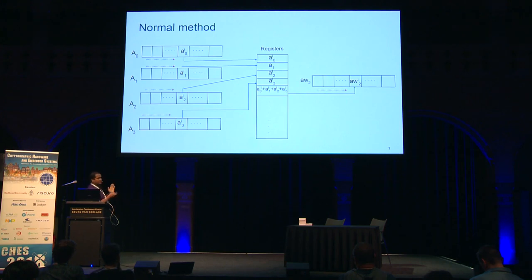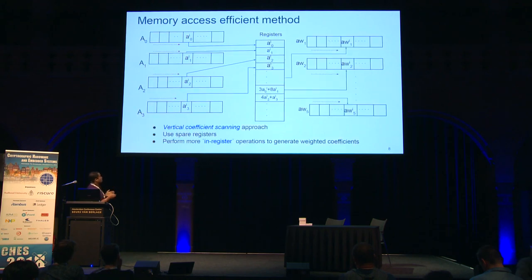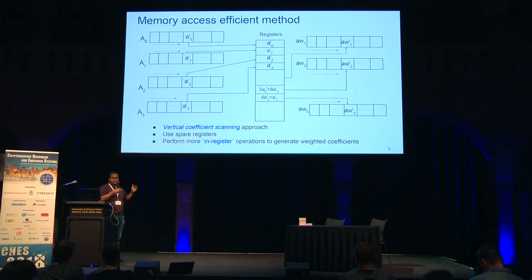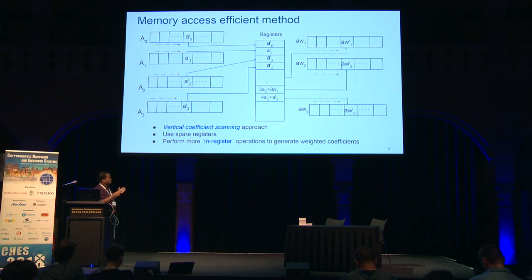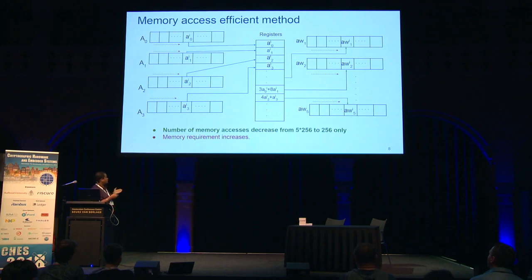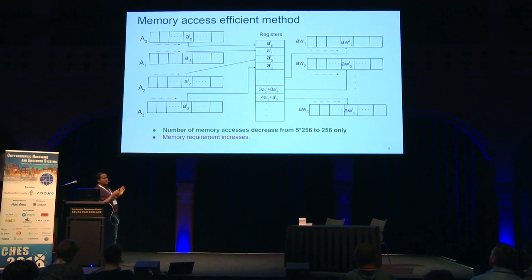Instead, we did a vertical coefficient scanning and in-register version of the Toom-Cook multiplication. We load our coefficients into registers, do all the weighted arithmetic inside the registers using some spare registers, and put them back in their corresponding positions. We do partial sums and some arrangements inside to reduce memory access as much as possible. As a result, instead of 5×256 memory accesses, we now need only 256 external memory accesses to generate all the weighted polynomials — a huge saving. The trade-off is we need extra space in memory to save our weighted polynomials.